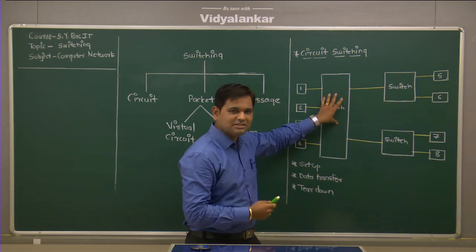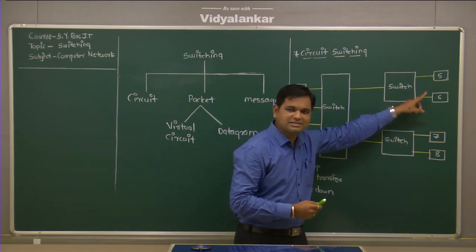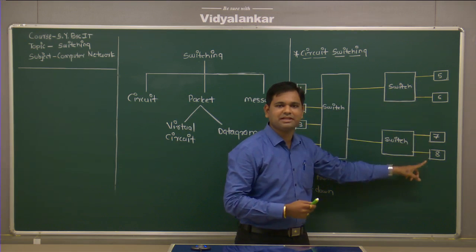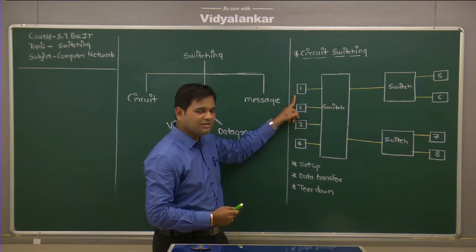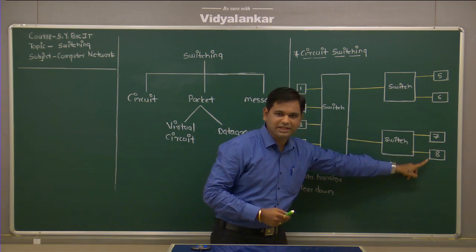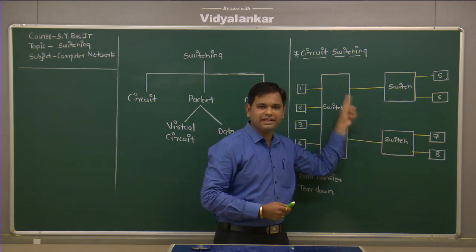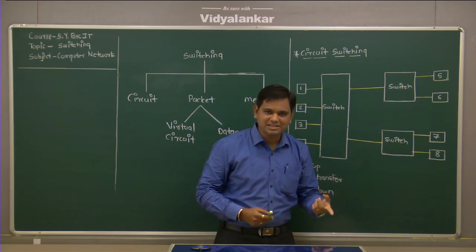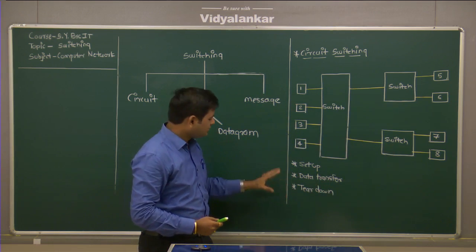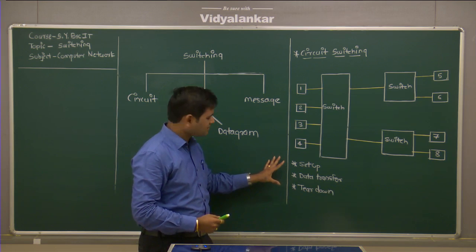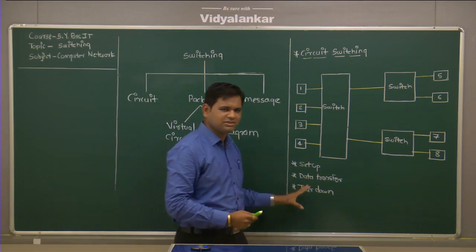For example, one switch is there for users 1, 2, 3, 4. There is one more switch for users 5 and 6, and one more switch for users 7 and 8. If user 1 wants to communicate with user 8, there is no direct communication between them. But if you want to establish communication, there are 3 phases of circuit switching: setup phase, data transfer phase, and teardown phase.